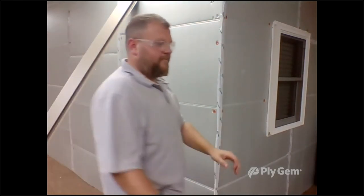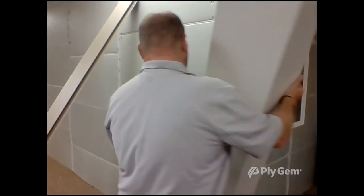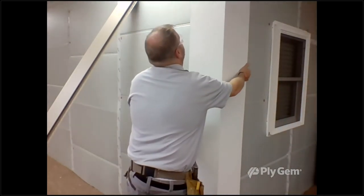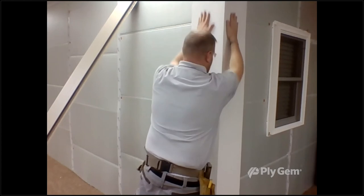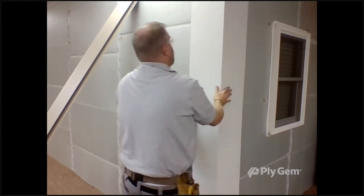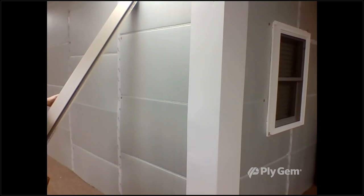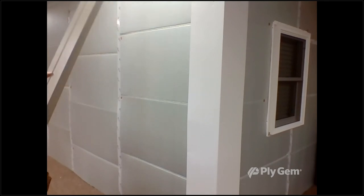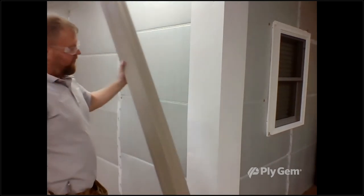The second option is using aluminum trim coil. Again, you break it 20 inches wide at minimum so you have 10 inches on both sides. Staple that up to make sure it stays in place. Once that's stapled, take your corner post and begin installation.